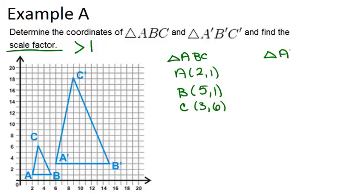Now, in triangle A'B'C', we have A' is at the point (6,3), B' is at the point (15,3), and C' is at the point (9,18).